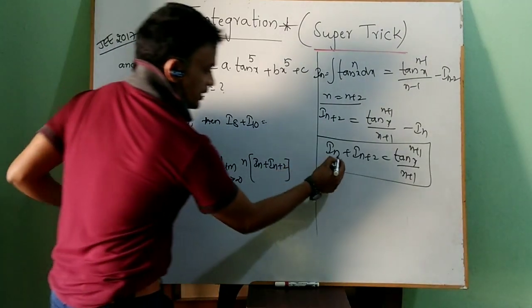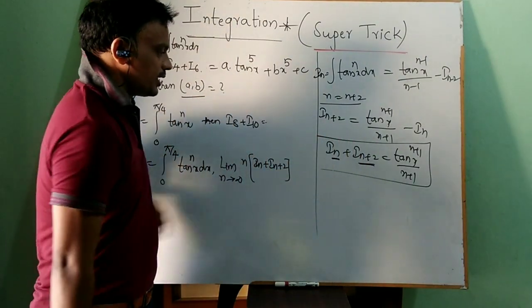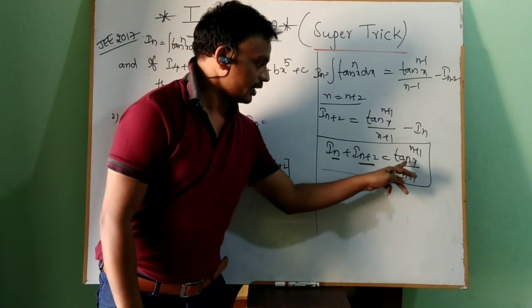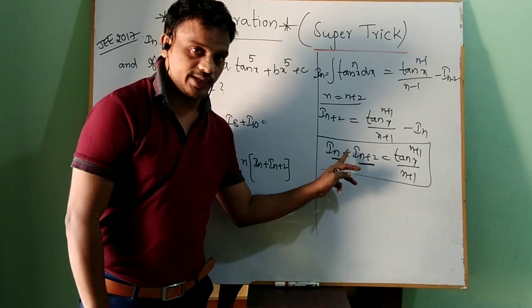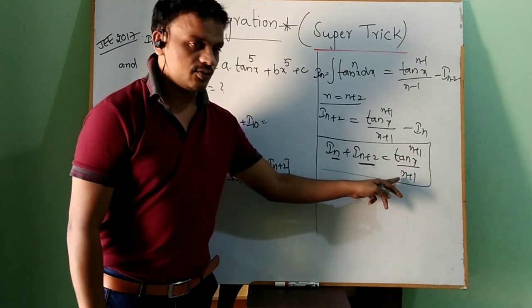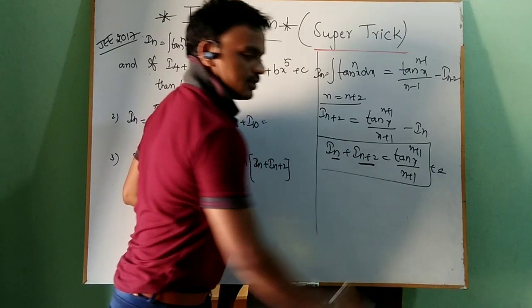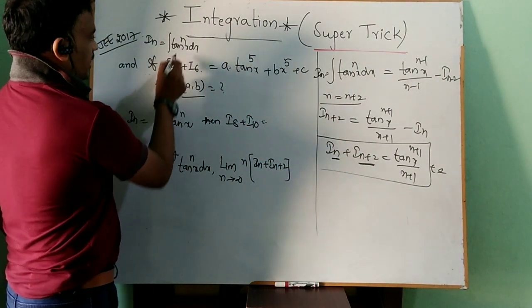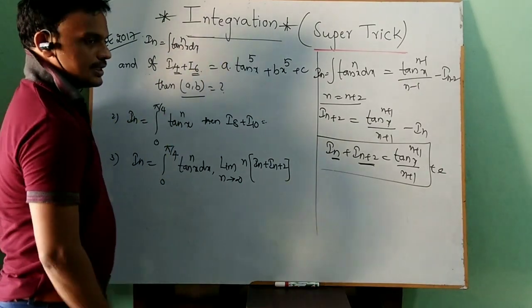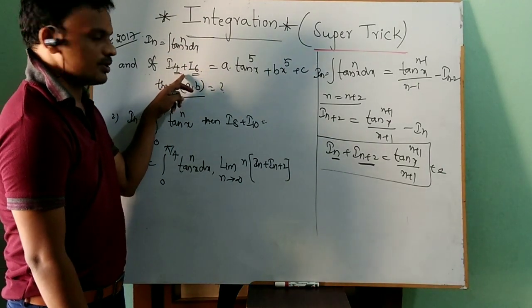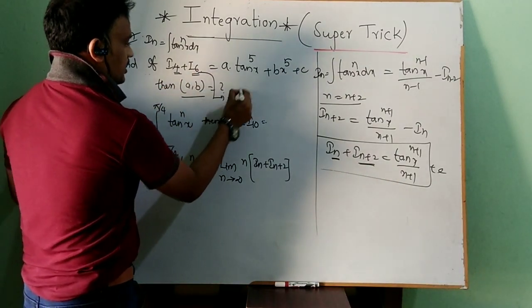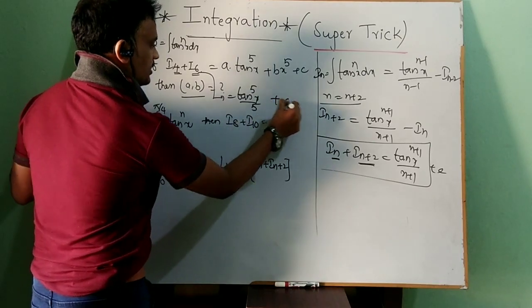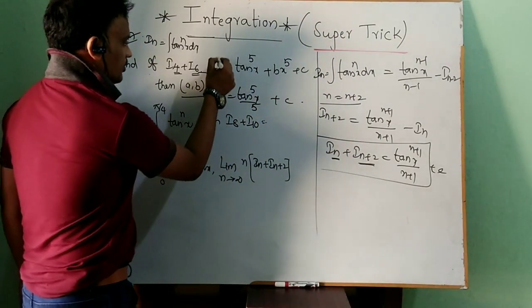So for i_n + i_{n+2}, the middle term n+1 is missed. The value is tan^{n+1}(x) / (n+1) + c. Applying this: i4 + i6 — the missing middle term is 5 — so the value is tan^5(x) / 5 + c.